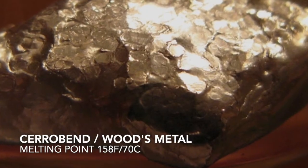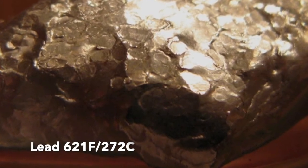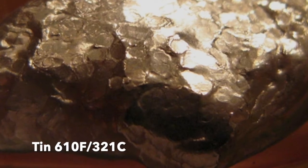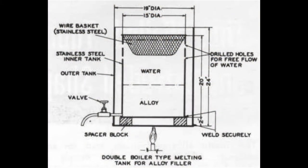A eutectic alloy is one that melts or solidifies at a single temperature that is lower than the melting point of any of the substances in the mixture. Cerobend melts sharply at 158 degrees Fahrenheit, or 70 degrees Celsius, well below the boiling point of water.